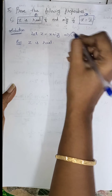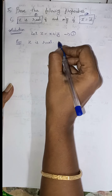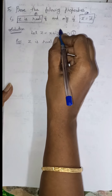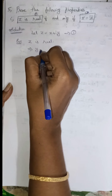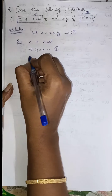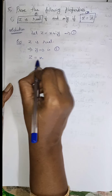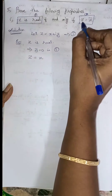Take this as equation 1. If Z is real, then the imaginary part is 0, which implies Y equals 0 in equation 1. If we substitute, Z equals X plus 0 times i, so Z equals X. Now we have to prove Z equals Z bar.